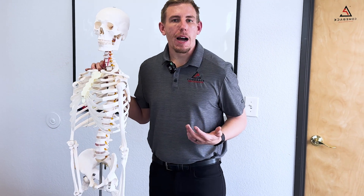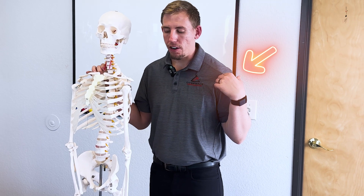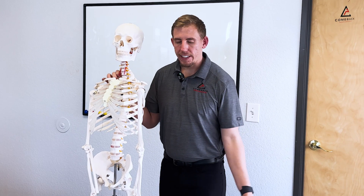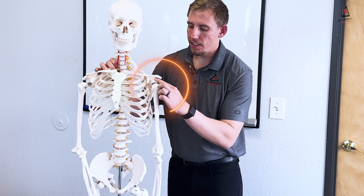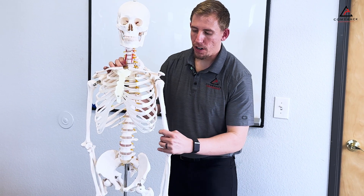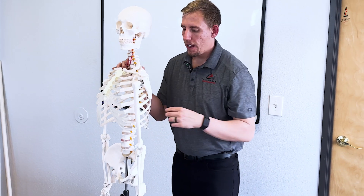One of the most common things that I see clinically is this anterior shoulder pain in the front right here. As we're raising our arm above our head, if this shoulder blade and shoulder are not working optimally together, it's going to cause a pinch. Watch what happens as we lift the arm above our head — it causes that pinching sensation right in the front.